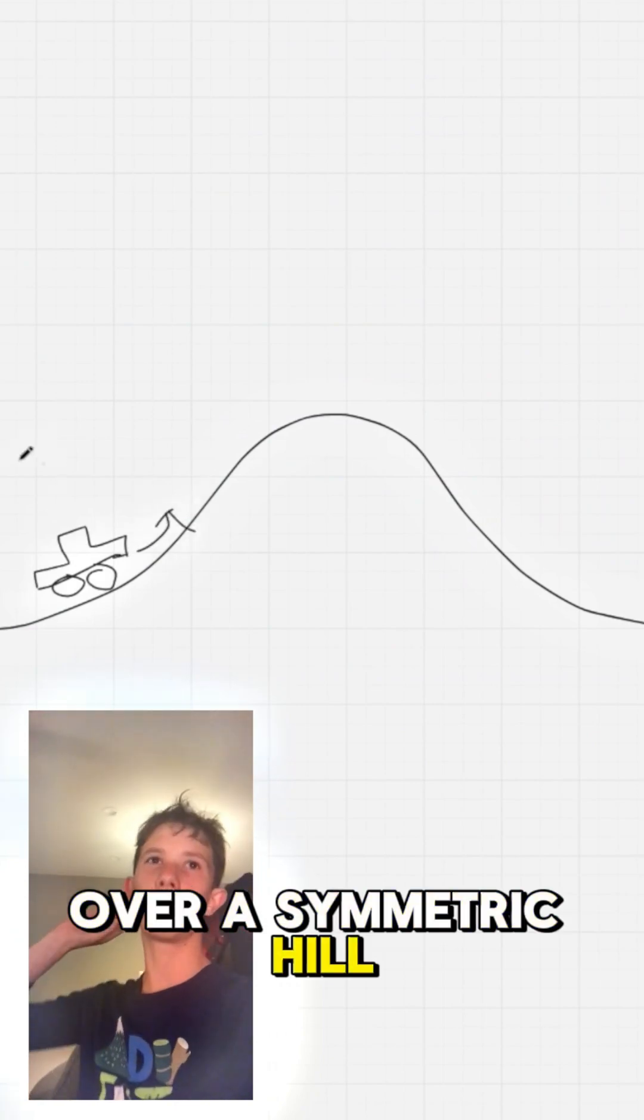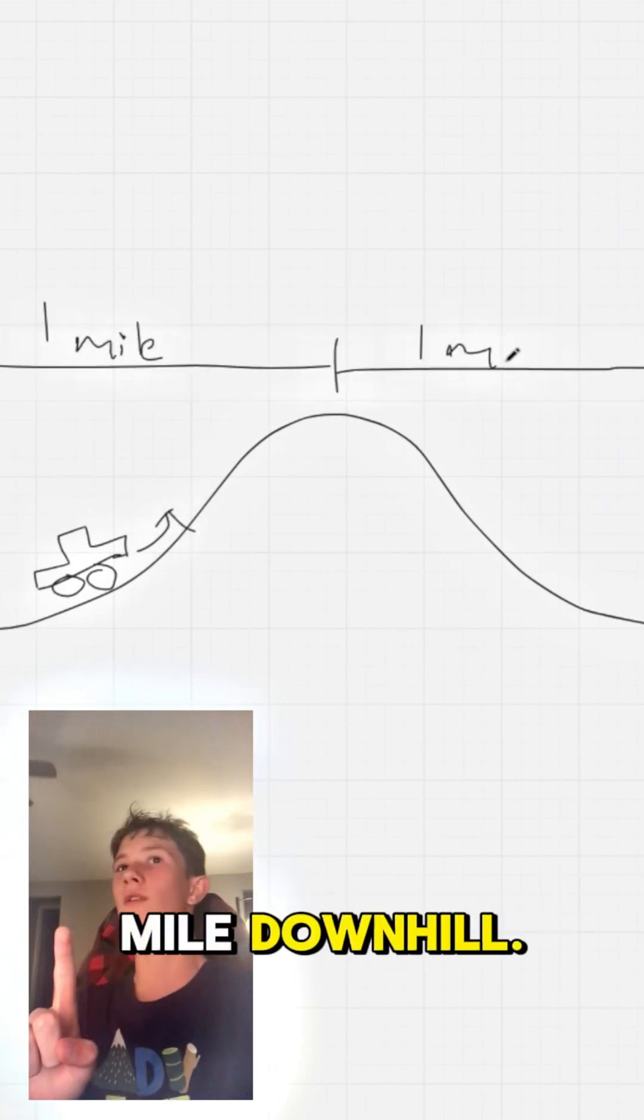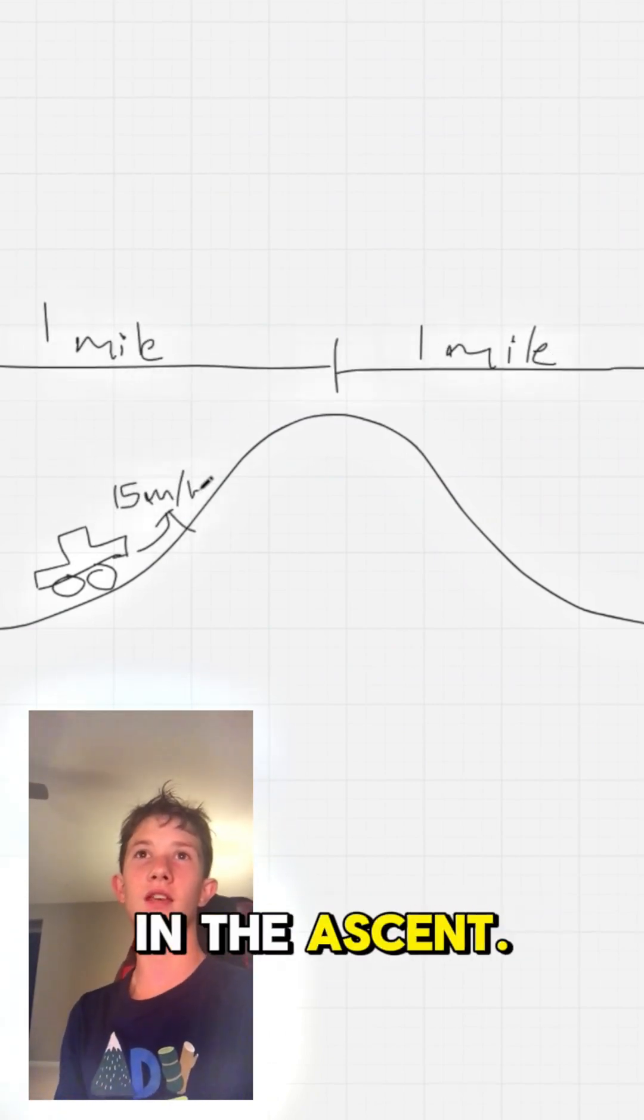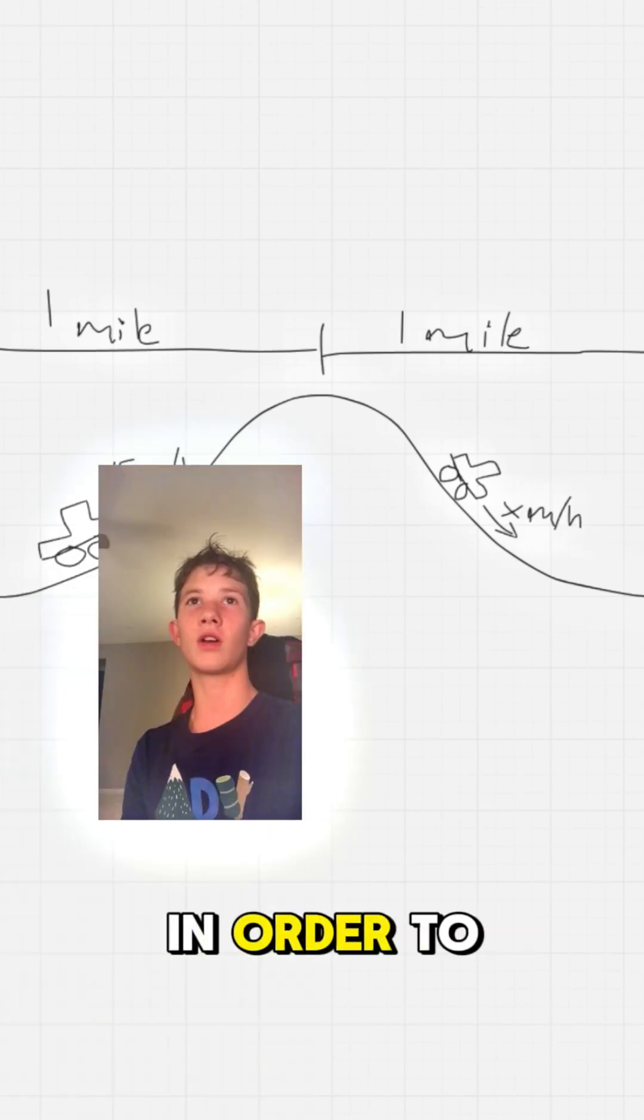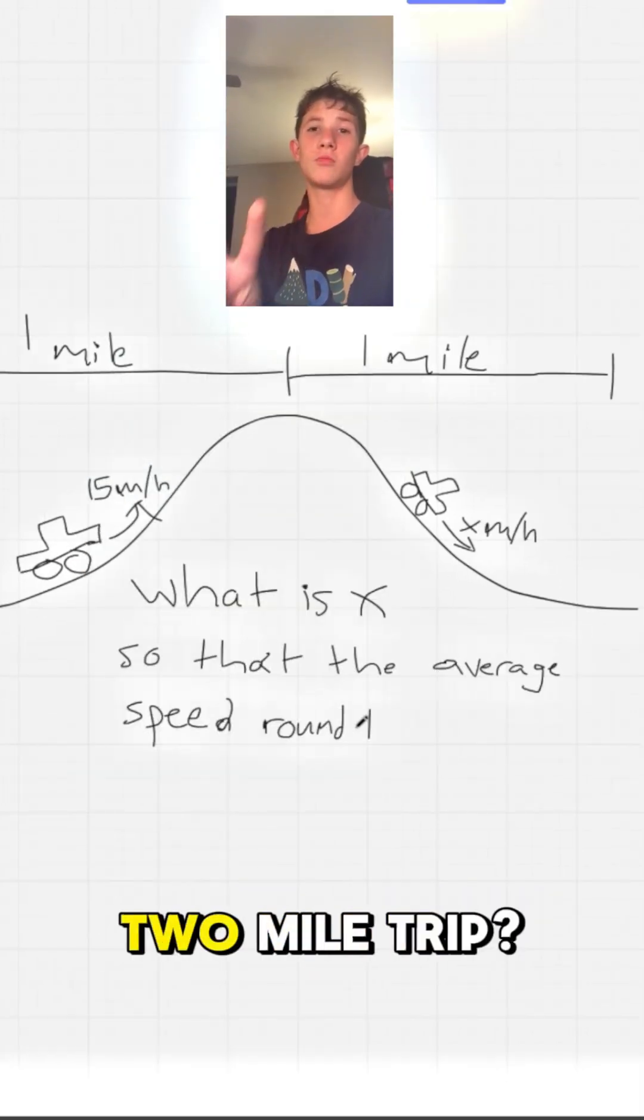Consider yourself in a car on a trip over a symmetric hill with a one-mile uphill segment and a one-mile downhill. You go 15 miles per hour on the ascent. Knowing this, how fast do you need to go on the descent in order to average a speed of 30 miles per hour for the entire two-mile trip?